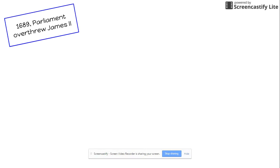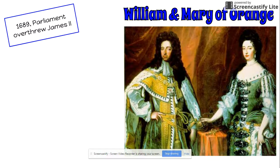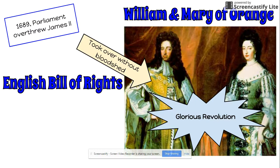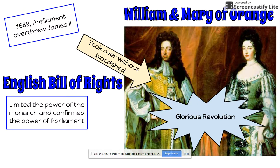Back in England, James II was also not well liked. In 1689, Parliament actually overthrew James II from his throne, and a new joint monarchy was put in place — William and Mary of Orange. This was known as the Glorious Revolution because they took over without a war or any bloodshed. When William and Mary came to the throne, Parliament also created the English Bill of Rights, which was very important because it limited the power of the monarch and affirmed the power of Parliament as more authoritative than the monarchy.